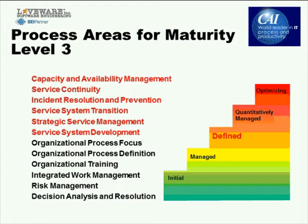Capacity and availability management is one of the nicest propositions I've heard in years for CMMI — a beautiful process area that helps you understand what you want to do and whether you're able to do it, serving as a wonderful transition to the quantitatively managed level. Service continuity addresses how to gracefully degrade your system in case of a catastrophe. Incident resolution and prevention covers how to treat incidents and identify which ones need to be prevented in the future.